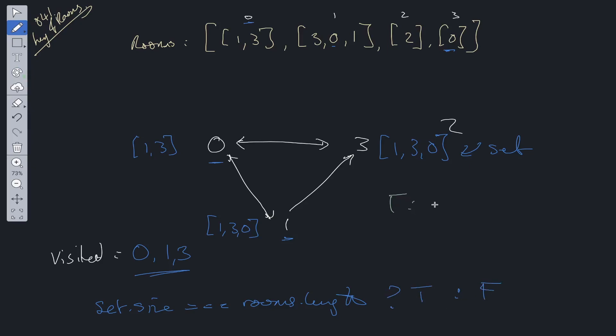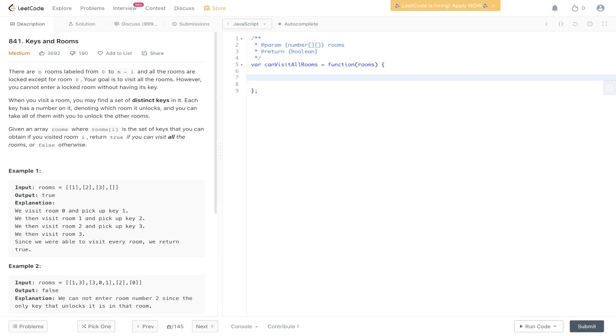Time complexity for this one is O(n + m), where n is the number of nodes and m is the number of keys. Space complexity is O(n).